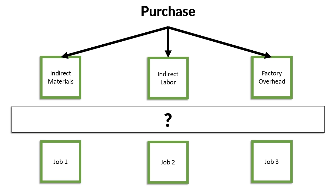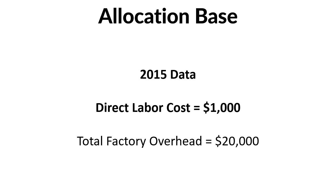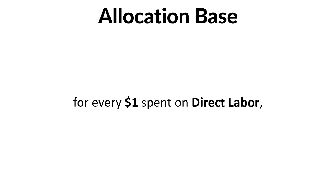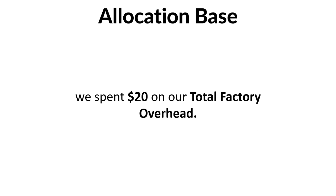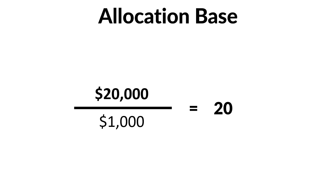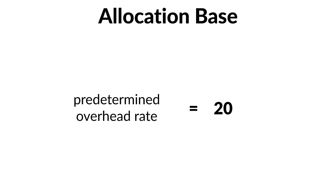This is why we have something called the allocation base — basically where we base our overhead. Let's say in 2015 we have a direct labor cost of $1,000 and a total factory overhead of $20,000. As managers, we say our allocation base is our direct labor cost, meaning the factory overhead we apply to jobs will depend on our direct labor cost. For every $1 spent on direct labor, we spend $20 on total factory overhead. We divided $20,000 by $1,000 and got 20, and this is what we call the predetermined overhead rate (POHR).